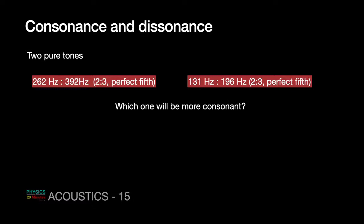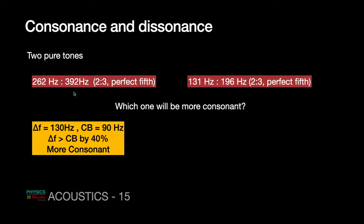The frequency difference in the first pair (262 and 392 Hz) is around 130 Hz. Around those frequencies, the critical bandwidth is about 90 Hz. The difference of 130 Hz is greater than the bandwidth of 90 Hz — by about 40%. That means one frequency would be heard by one part of the basilar membrane while the second frequency would be heard by a different part — they fall on two different critical bands.